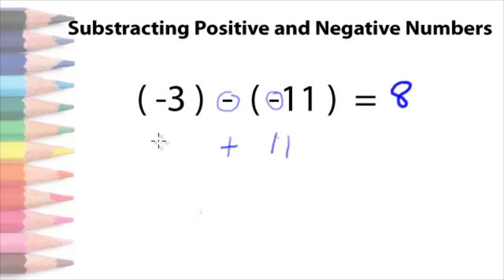And don't forget to fill in for negative 3. So, negative 3 plus 11 equals 8. This is the same thing as 11 minus 3 equals 8.